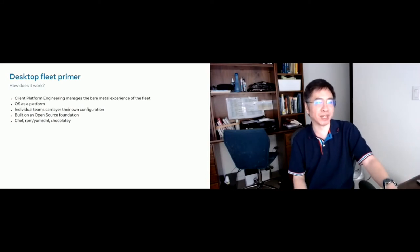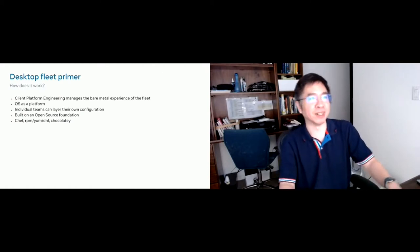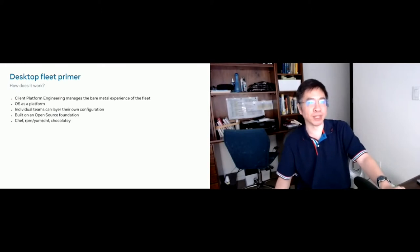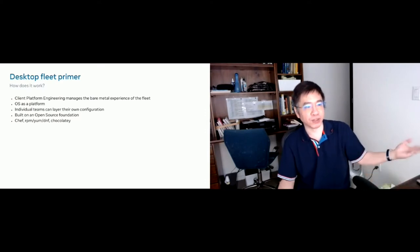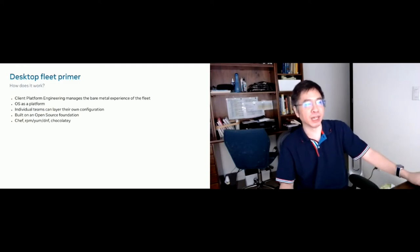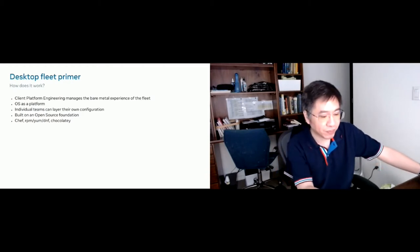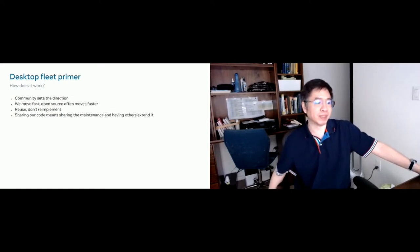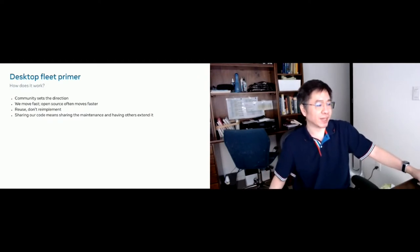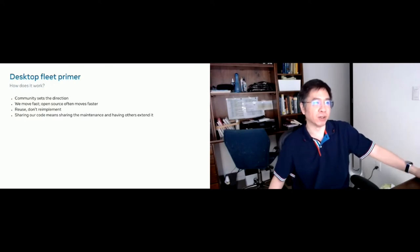We can't cater individually to 100,000 users who all have different needs, so we see the OS we provide as a platform that different teams can build on and layer their own configuration and deploy their own tools. We try to use as much open source tooling as possible. With Linux the whole stack is open source, but even on macOS and Windows we use Chef to manage the fleet, RPM and YUM on macOS as well as Fedora and CentOS, and Chocolatey on Windows. Since we're a small team, we don't want to reinvent the wheel — the open source community sets the direction and we try to collaborate rather than fork.